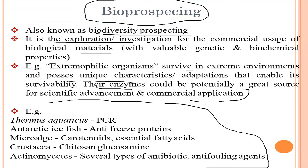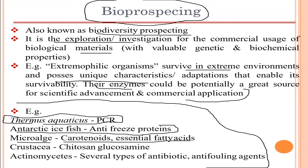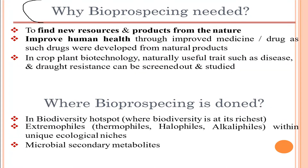Some examples of bioprospecting include: Thermus aquaticus, used in PCR; Antarctic icefish, which contains antifreeze proteins; microalgae, which have carotenoids and essential fatty acids; crustaceans, which have chitin and glucosamine; and actinomycetes, which contain several types of antibiotics and antifungal agents. These are biological materials that help improve particular processes.